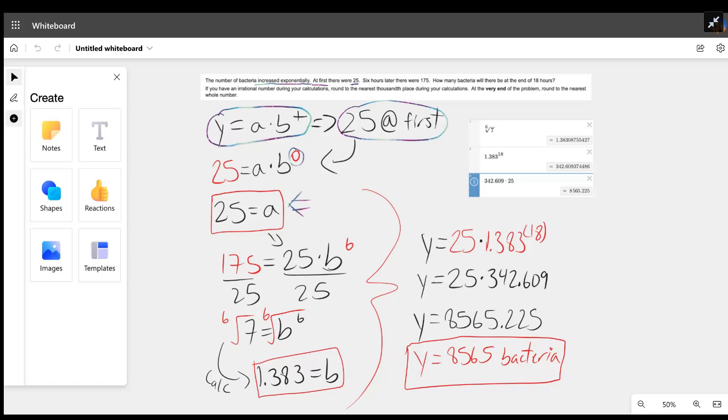Now we go straight down to the next equation. In the next sentence in the word problem, we have six hours later there were 175 bacteria, so we now know the value of t is six and the bacteria value we're supposed to eventually get is 175. We can plug that into y right here: 175 equals 25 times b to the power of six.